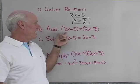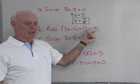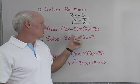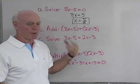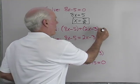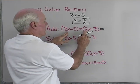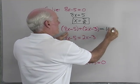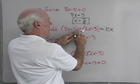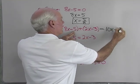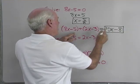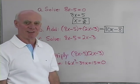Next problem, I want to add 8x minus 5 and 2x minus 3. So this isn't an equation. This is just two expressions, and I want to find their sum. So 8x plus 2x is going to be 10x, negative 5 plus negative 3 is negative 8. So there is the sum of these two expressions right here.